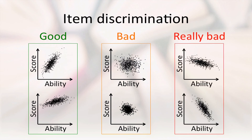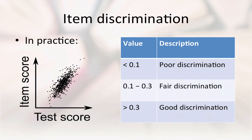Even worse would be a graph like this, in which our stronger students are actually doing worse on the question. In practice, we don't know students' abilities in advance, but we can compare their score on each question against their score on the test as a whole, and this is how we estimate discrimination. Discrimination of less than about 0.1, and especially negative discrimination, suggests that a question needs to be reexamined.